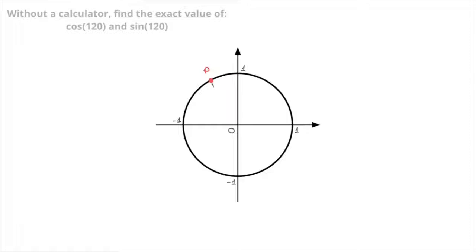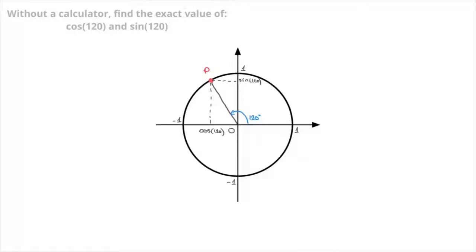As always, I'll draw the radius OP, like so. This angle corresponds to 120 degrees. By definition, point P has coordinates equal to cosine of 120 and sine of 120. Just as we did previously, we make a note of the angle separating P from 180 degrees. Since we went through 120 degrees to get to P, there should be 60 degrees left — that's 60 degrees.